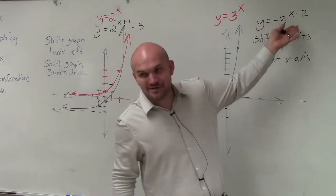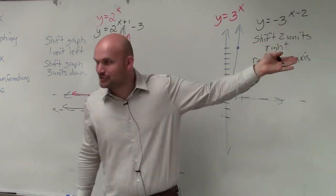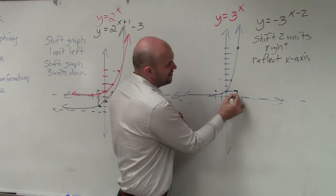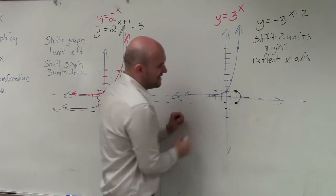Well, I said two units to the right. I just didn't do two units to the right, right? So each point should be shifted two units to the right, and then reflected over the x-axis.